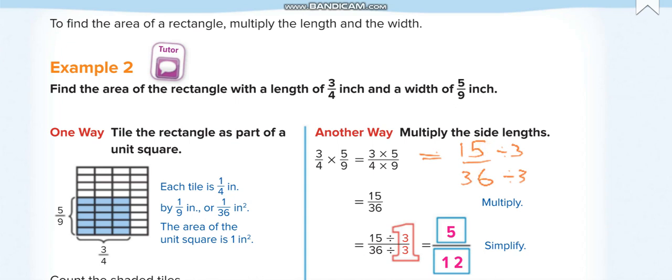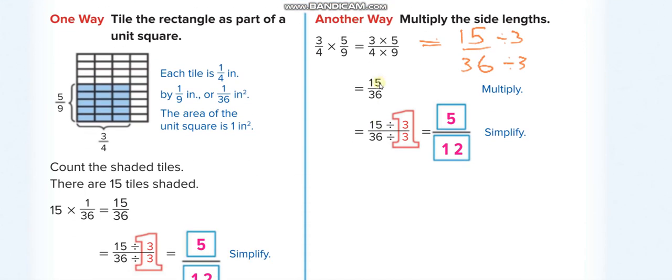15/36, then we simplify. Divide by 3 up and down: 15 divided by 3 equals 5, 36 divided by 3 equals 12. So 5/12.